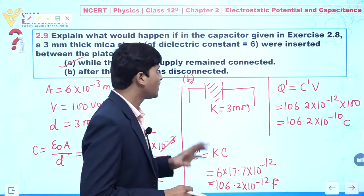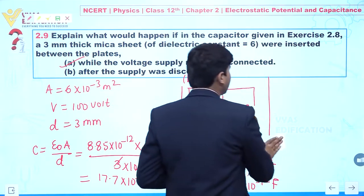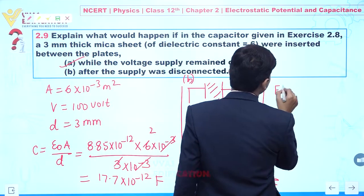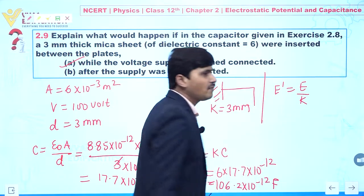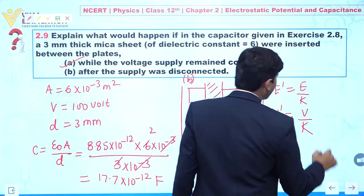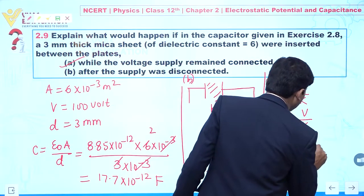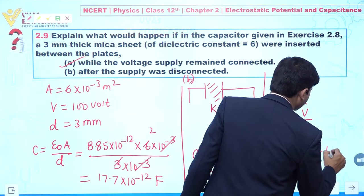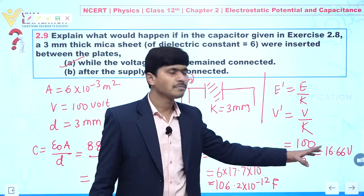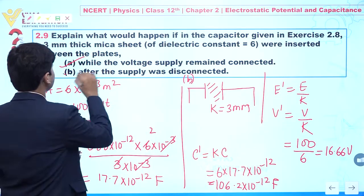The value of charge remains the same, but what will happen to the potential? Whenever we insert a dielectric slab between parallel plate capacitor, the net electric field decreases: E' = E/K. Since there is a relation between electric field and potential difference, we can write V' = V/K = 100/6 = 16.66 V. So the final potential difference becomes 16.66 V. That is all about this question.